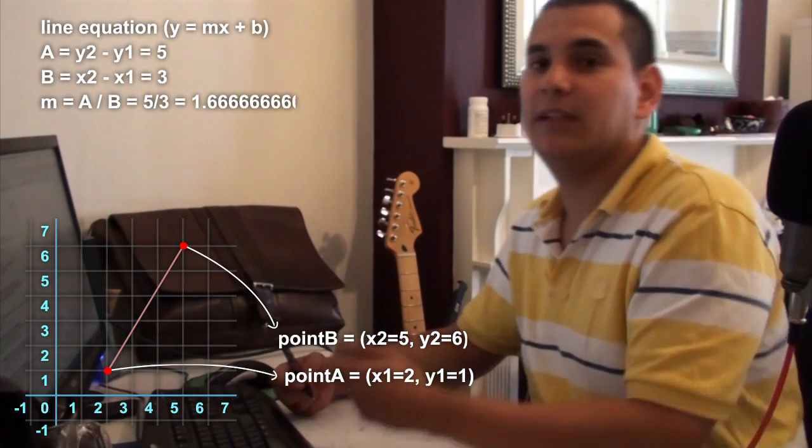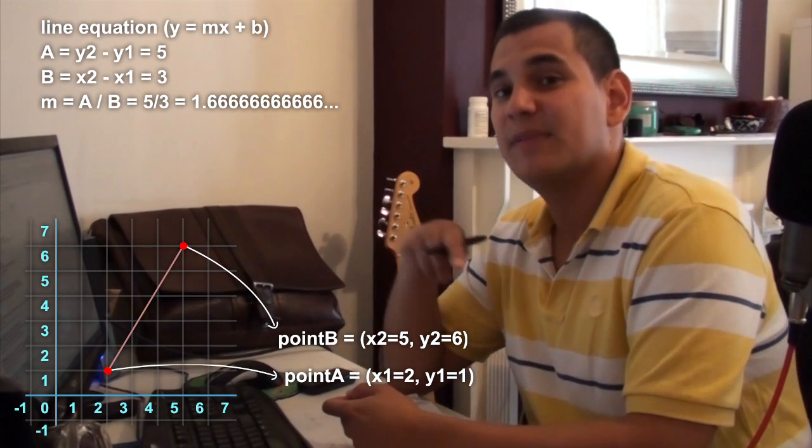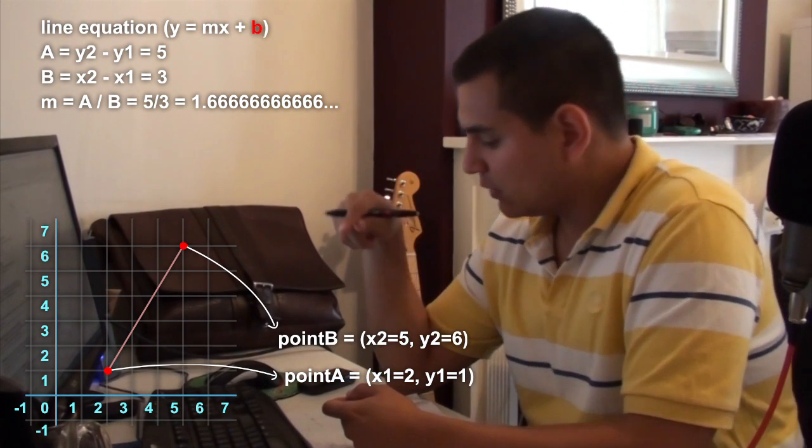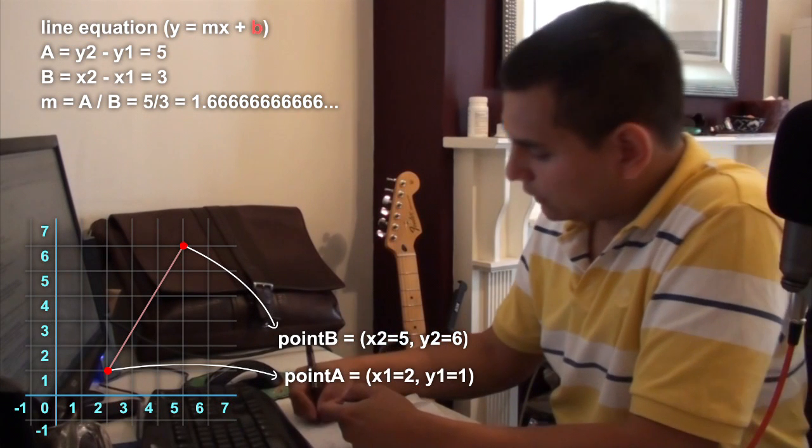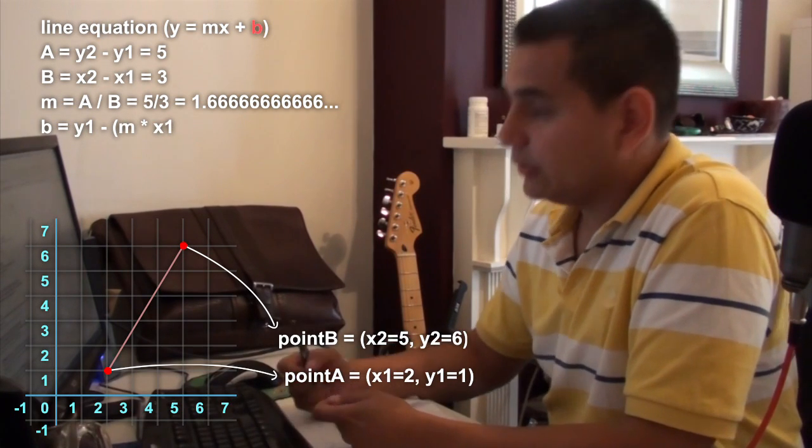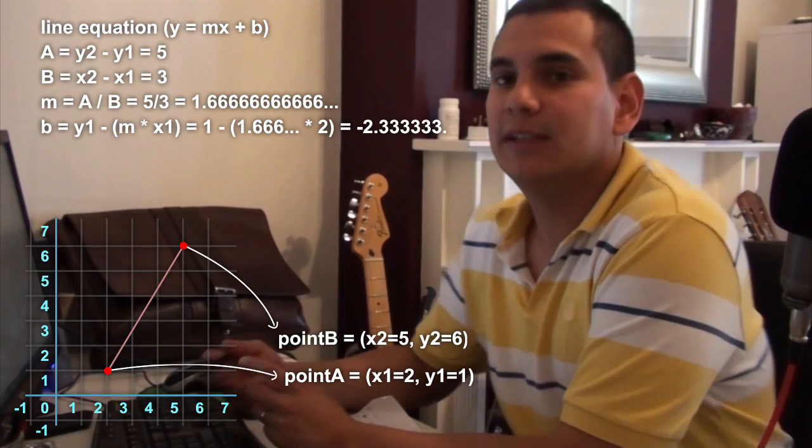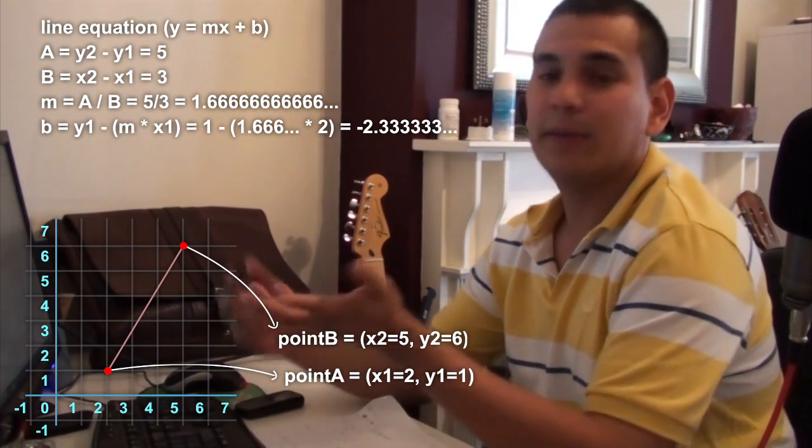And then we have the last part of it, that we have to know a dot that intersects the Y axis of our line. So for doing that, let's say we got B equal Y1 minus the slope times X1. So that's all. So now we can choose any value for X to find out the value of Y or vice versa.